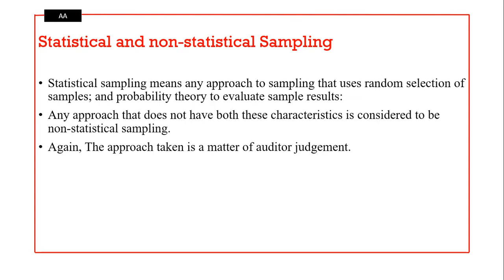There are two types of sampling methods. Statistical sampling uses random selection and probability theory to evaluate sample results. Any approach that does not have both these characteristics is considered to be non-statistical sampling. The approach taken is a matter of the auditor's judgment.